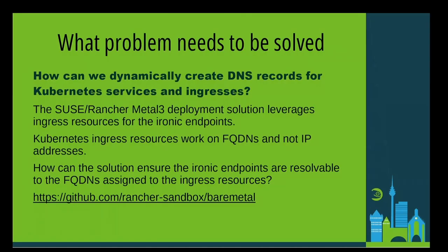The Rancher Bare Metal project uses the Ironic service to handle the bare metal deployment to the edge nodes. In order to provide a flexible solution and be compatible with Kubernetes Ingress resources, the Ironic endpoints are configured with host names and not IP addresses. How can we dynamically create the host names when the Ironic services are deployed?